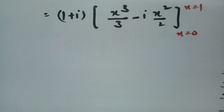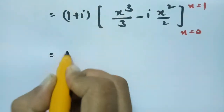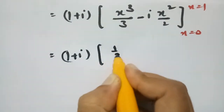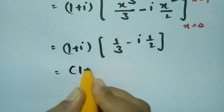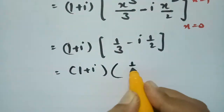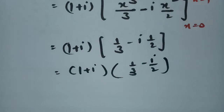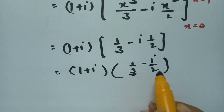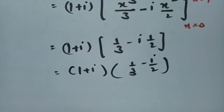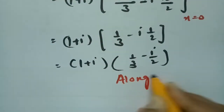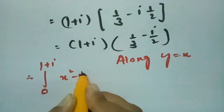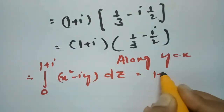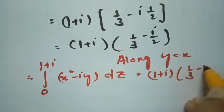Substituting the limits, upper minus lower (lower limit gives 0), we get (1 + i) times (1/3 - i/2). Therefore, the integral from 0 to 1+i of (x² - iy) dz = (1 + i)(1/3 - i/2) along the path y = x.